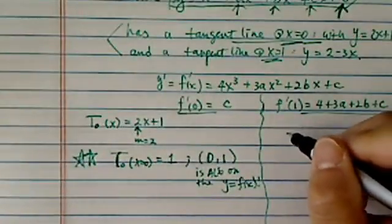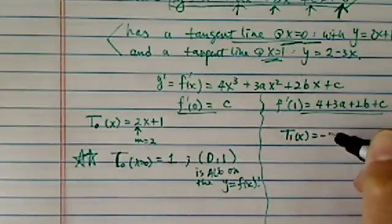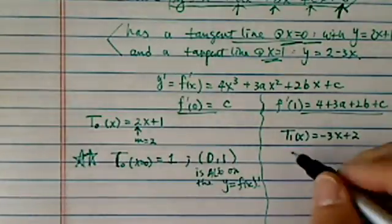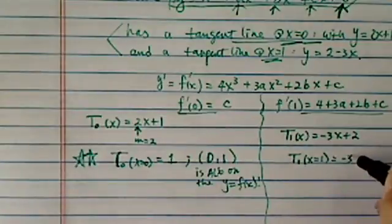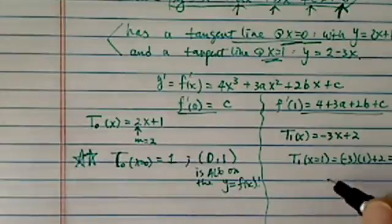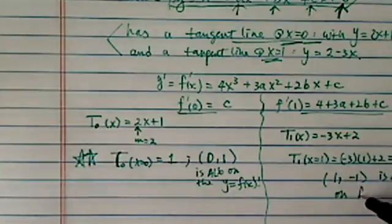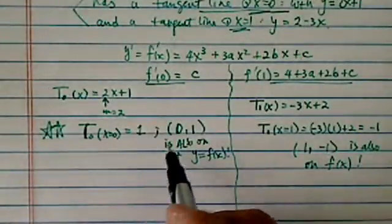Let's do the same thing here. The tangent at x equals 1 is given as -3x plus 2. When x equals 1, I have -3 times 1 plus 2 equals -1. So the point (1, -1) is also on f(x). This is important; we'll use this later. Now let's go back.